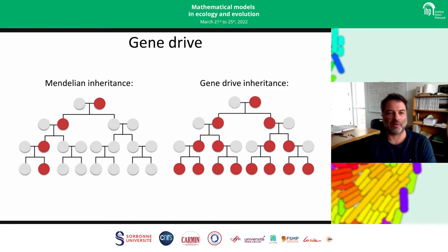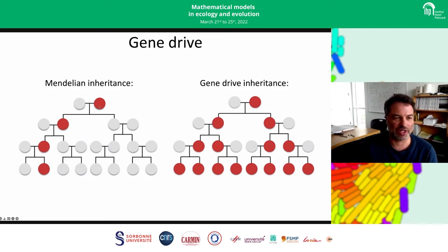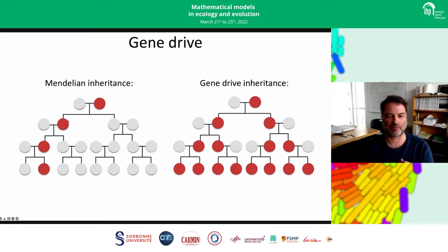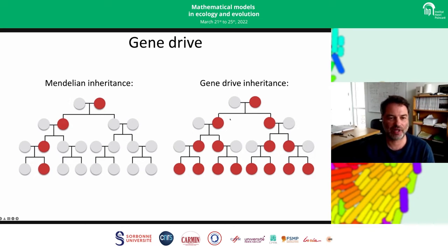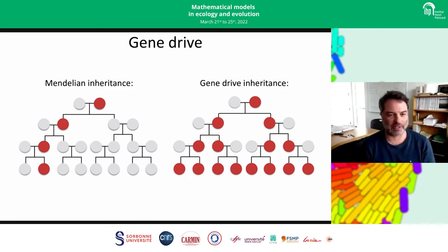What is a gene drive? A gene drive is a genetic variant that can be inherited at a higher rate than your typical Mendelian inheritance. In a diploid organism, if you have one allele from your mother and one from your father, the probability that you pass on any given one to your offspring is one half. But for a gene drive allele, that is higher, so the drive allele will actually increase in frequency in the population — almost like a chain reaction — at an exponential rate.